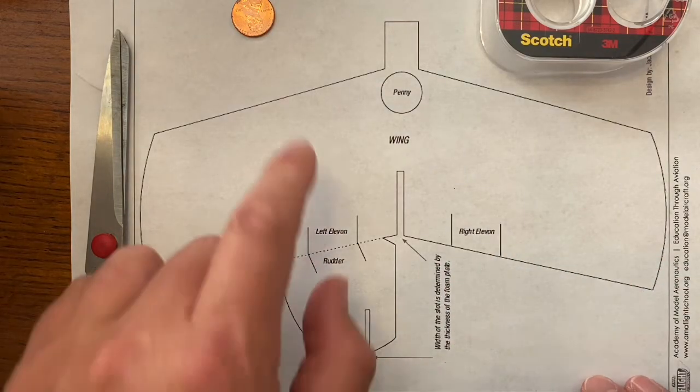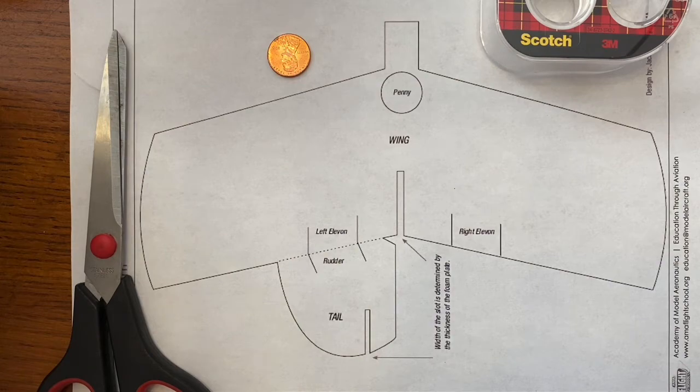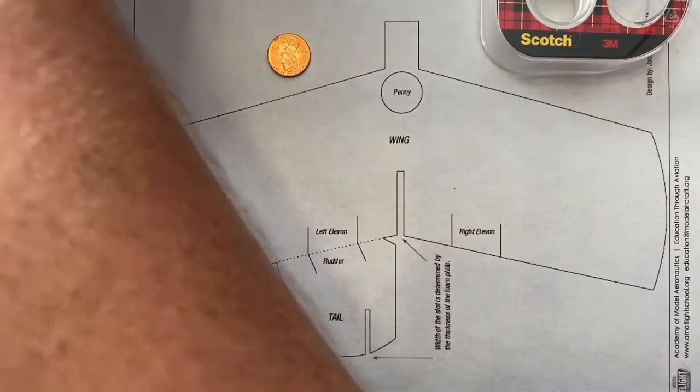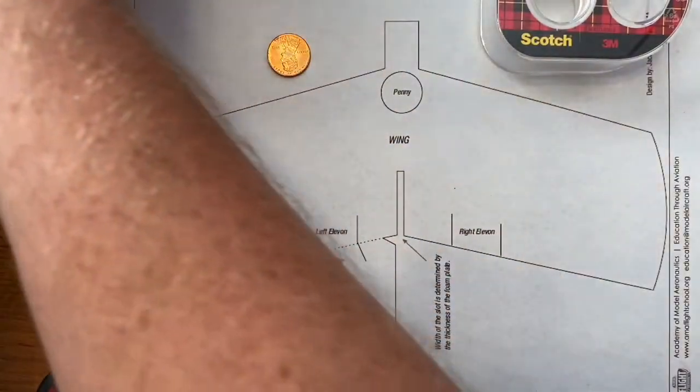Print that out, locate a penny somewhere in your house, some scotch tape, and some scissors. You also need to have foam plates readily available. This package of foam plates from Walmart cost less than $2.